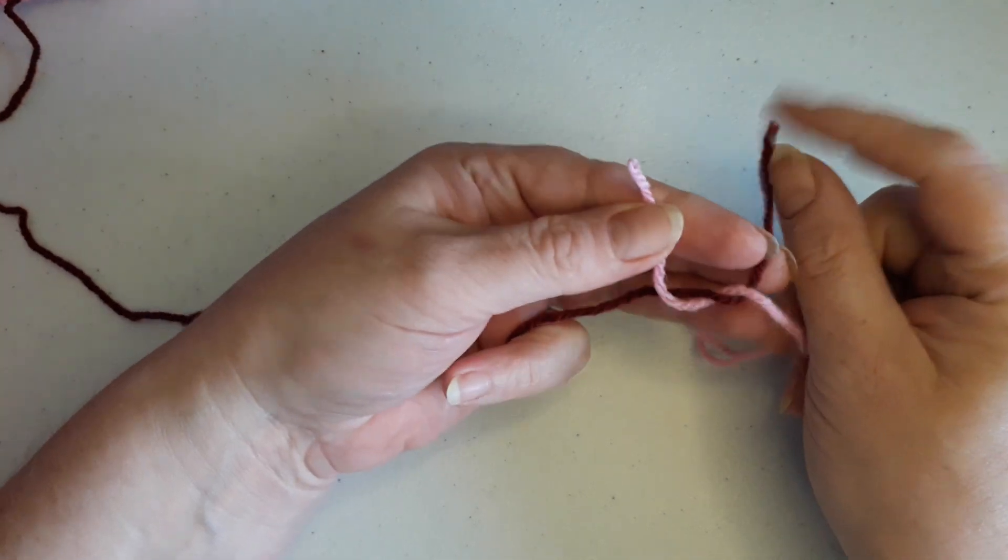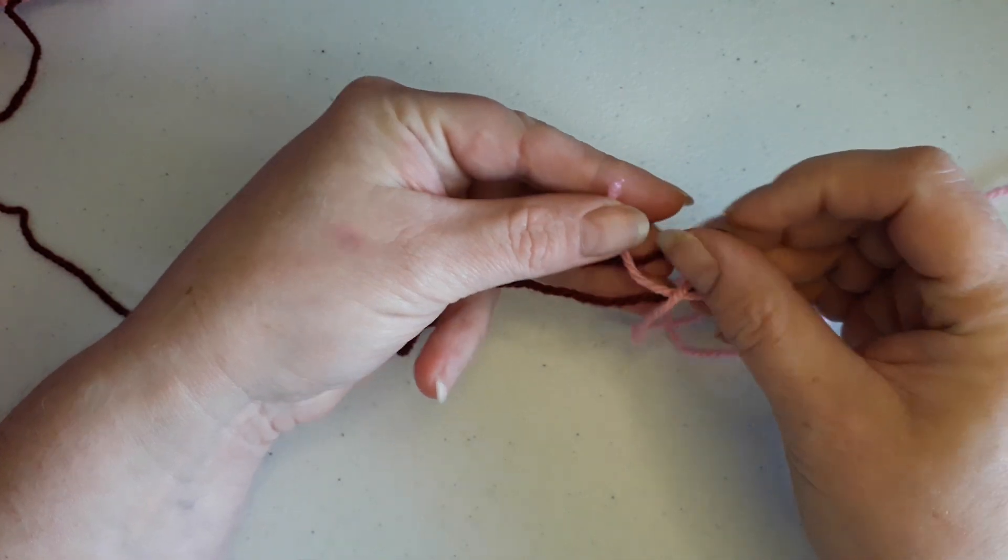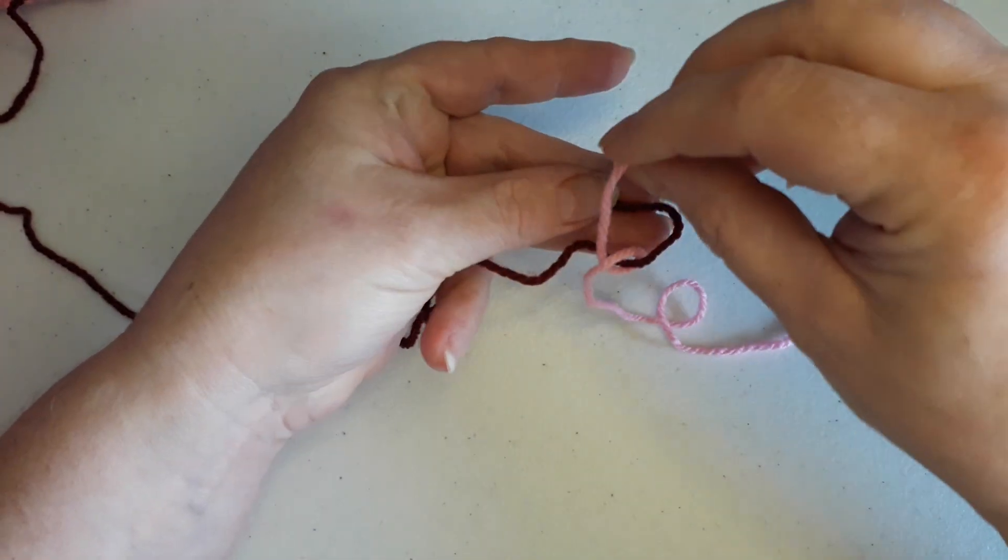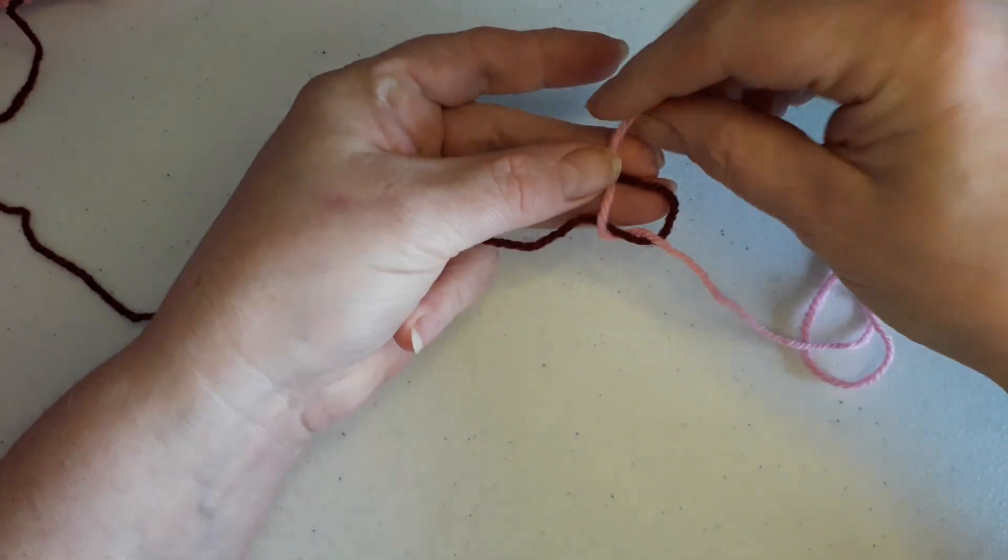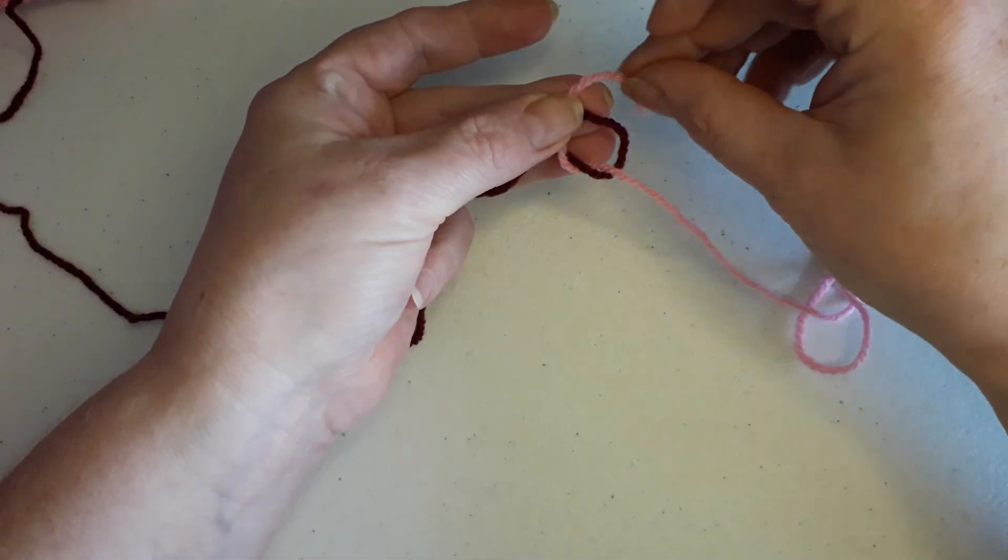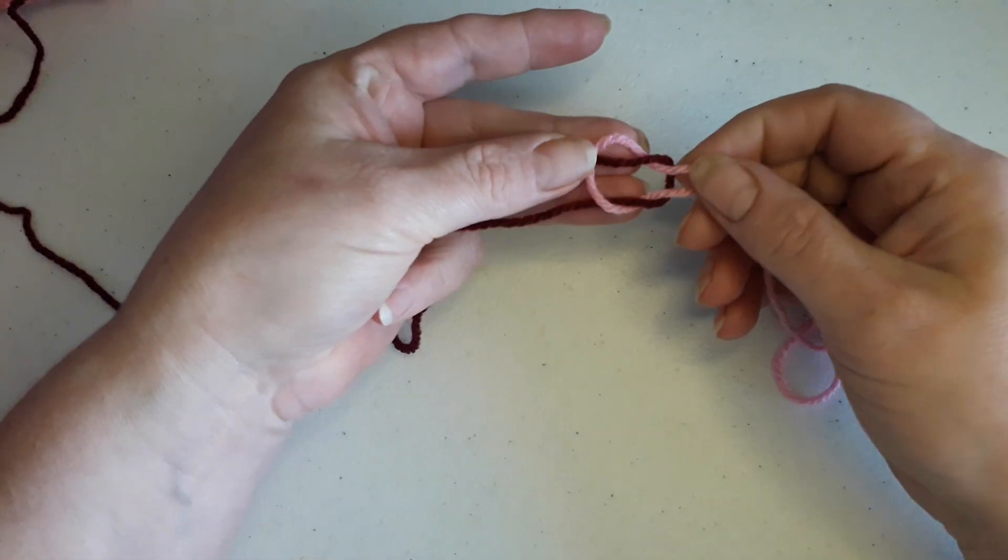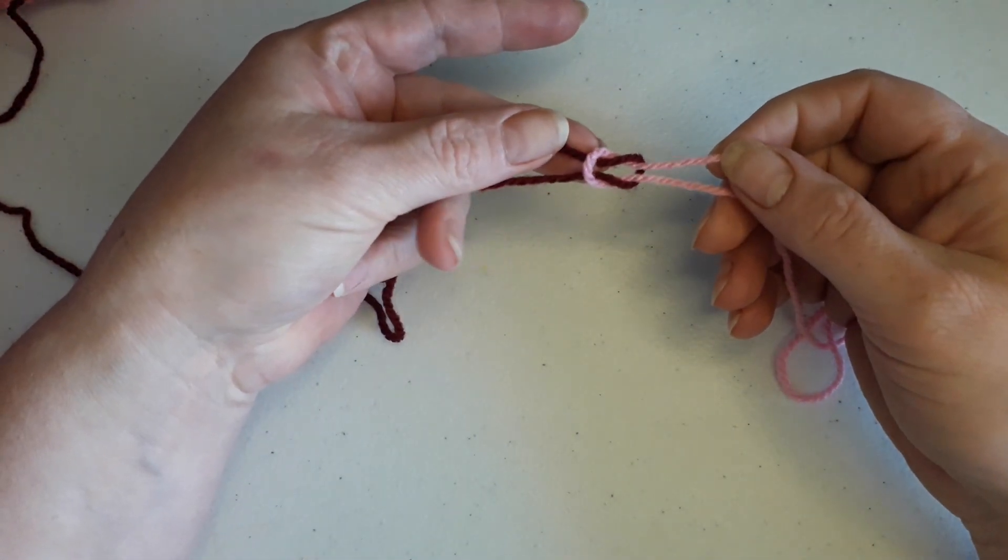Then this end you're putting in underneath this loop, that yarn, and then you are putting it underneath, putting it out through, and you're making like two loops, you see.